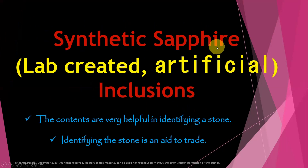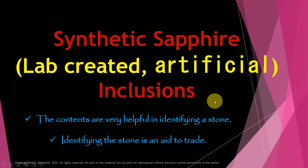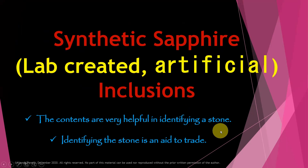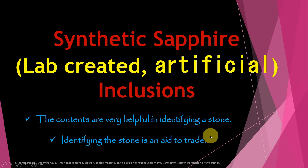We are moving to lesson number five, next part: synthetic sapphire. That means lab-created, artificial, or man-made inclusions we are discussing from here. Then after that we are discussing heat treated. The contents are very helpful in identifying the stone. Identifying the stone is an aid to trade. Remember this last line.